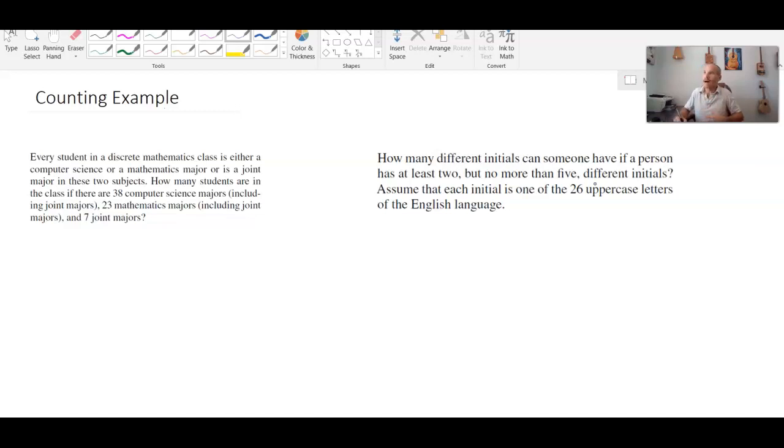Here we have that every student in a discrete mathematics class is either a computer science or mathematics major or as a joint major in these two subjects. How many students are in the class if there are 38 computer science majors including joint majors, 23 mathematics majors including joint majors, and seven joint majors?